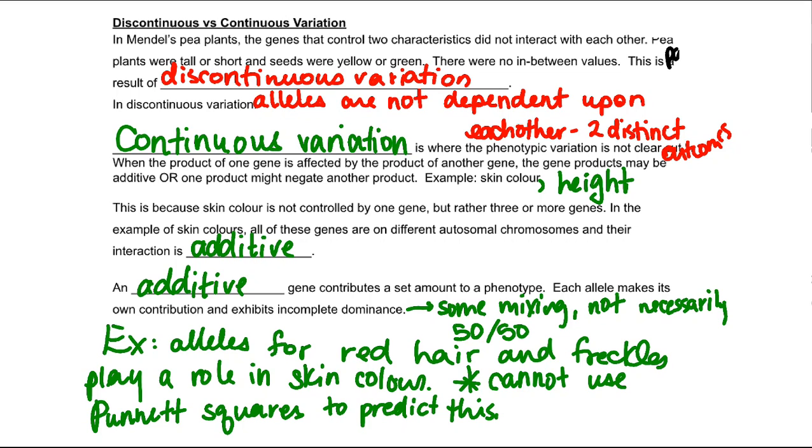This is a result of what's called discontinuous variation. In discontinuous variation, alleles are not dependent upon each other. They're two distinct chromosomes, two distinct outcomes.